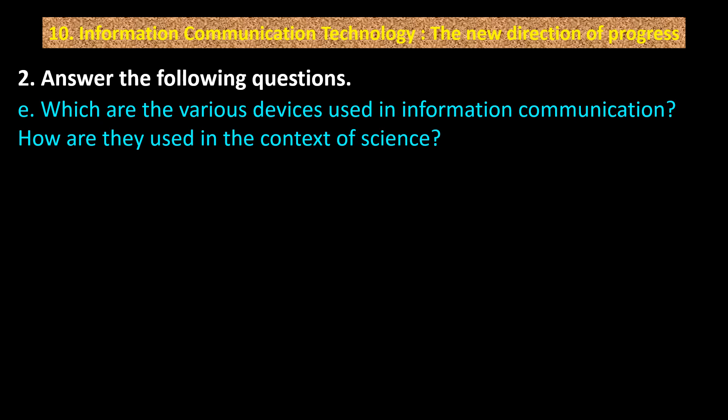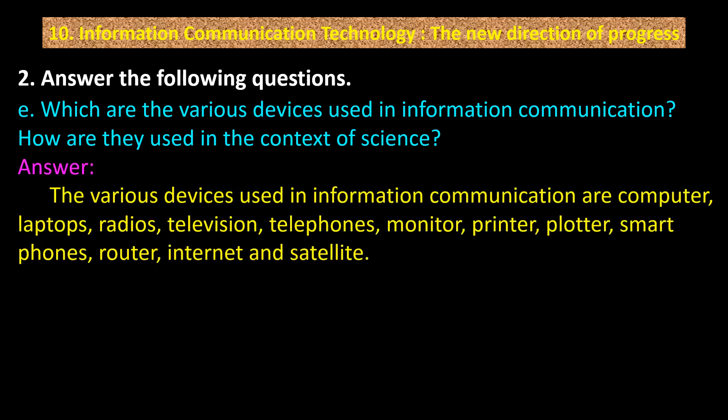Part E: Which are the various devices used in information communication and how are they used in the context of science? The various devices used in information communication are: computers, laptops, radio, televisions, telephones, monitor, printer, plotter, smartphones, router, internet, and satellites.